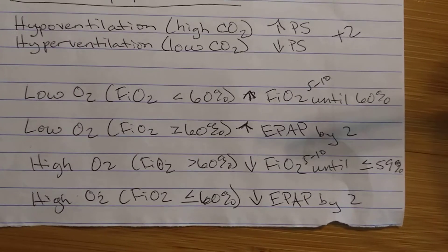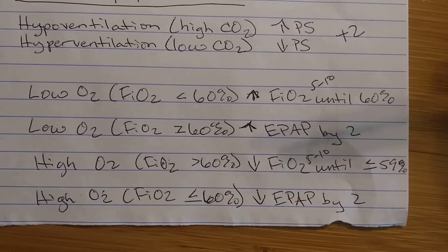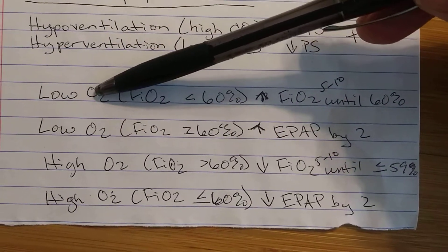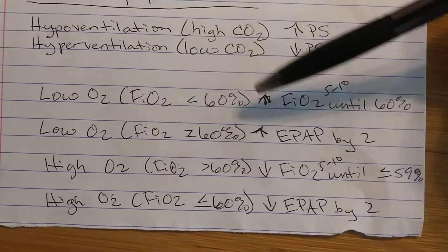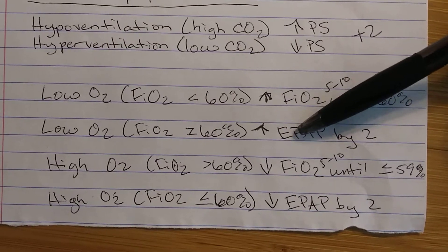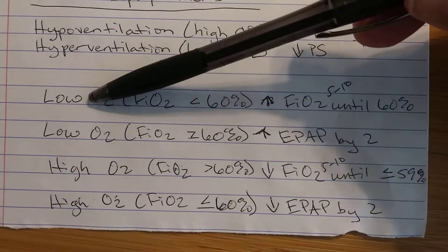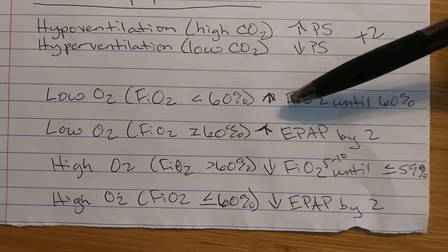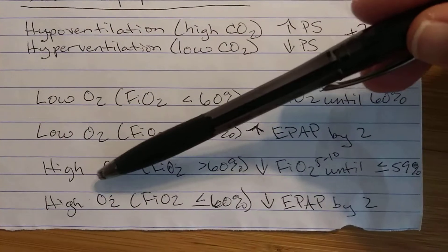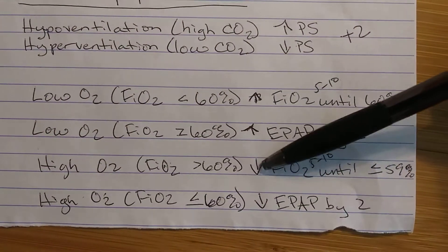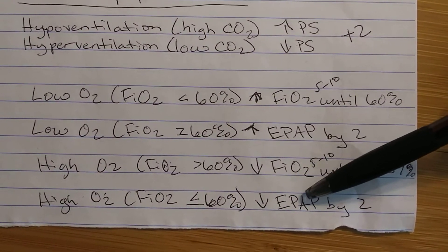When we look at our O2 and figuring out what we need to adjust on our BiPAP settings for our O2: if we have low O2, then we need to increase it — we're either going to increase our FiO2 or our EPAP. If our O2 is high, we need to decrease FiO2 or EPAP.